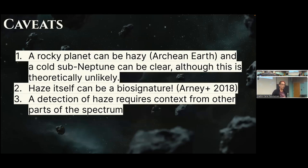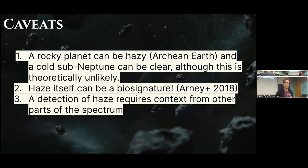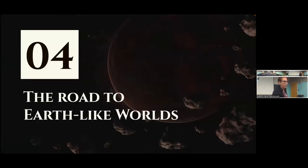The caveats are: a rocky planet can be hazy, a cold Neptune can be clear — though this is kind of unlikely. Haze itself can be a biosignature, and there's a lot Giada could say about that. Finally, if we detect haze, it's going to require context from other parts of the spectrum to really sort it out — is this haze a biosignature, or does it have an abiotic source? I'm going to take my last couple of minutes and talk about the road to Earth-like worlds.